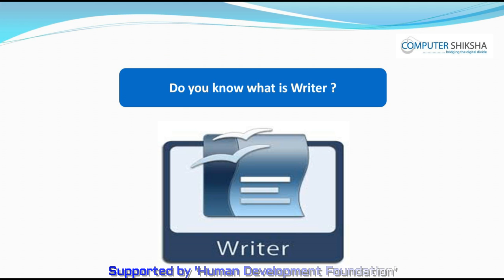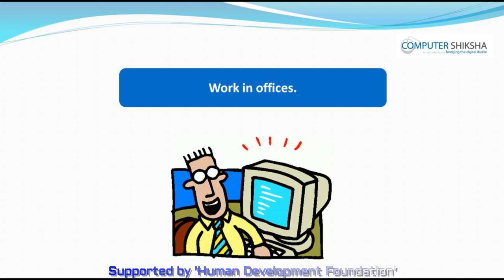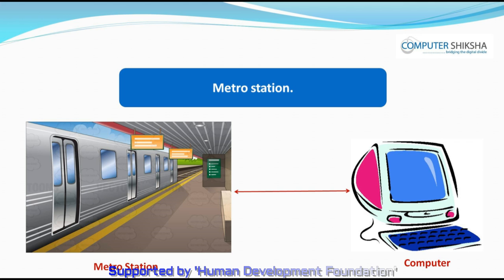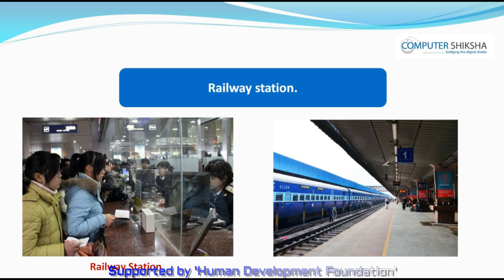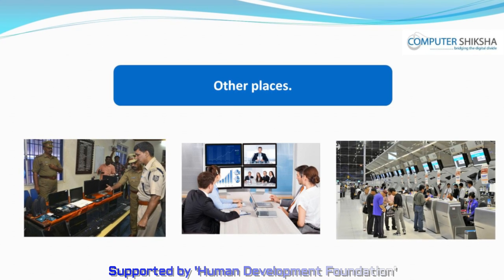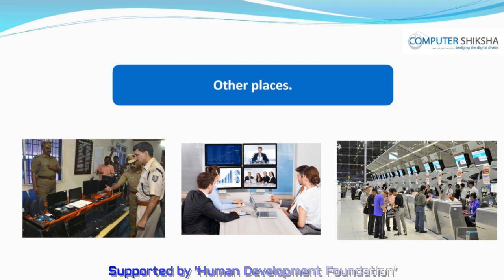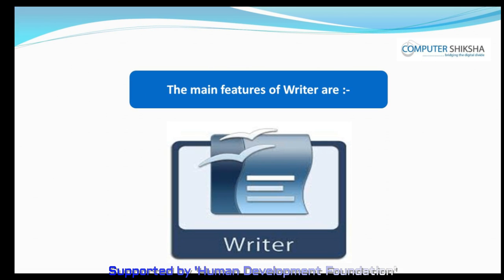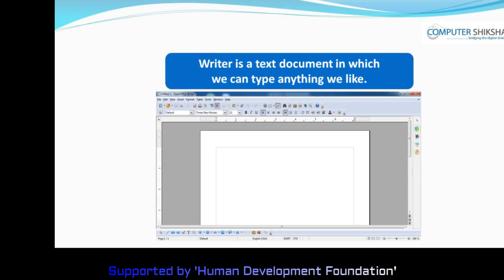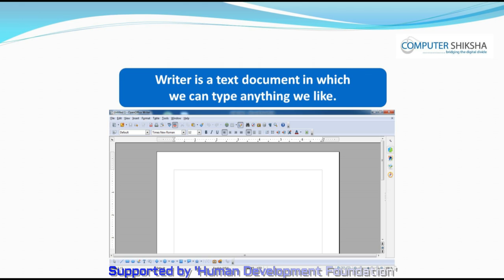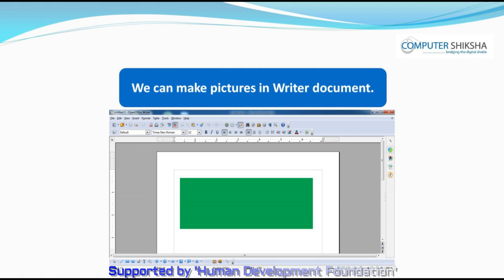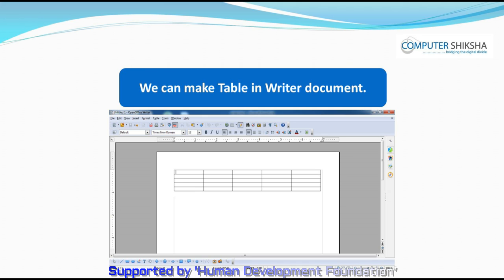Do you know what is Writer? In OpenOffice, Writer contains text documents and it is used for work in offices, schools, homes, metro stations, railway stations, and many other places. It helps us in writing things about what we want to note down and be able to recall in the future. The main features of Writer are: Writer is a text document in which we can type anything we like. Using Writer, besides typing, we can also make pictures, tables, and charts. We can convert our document into PDF files directly.